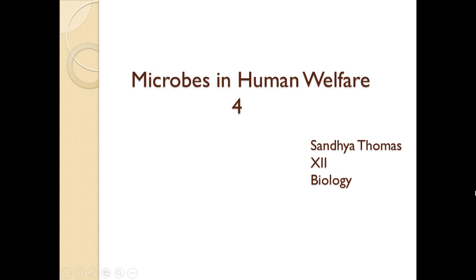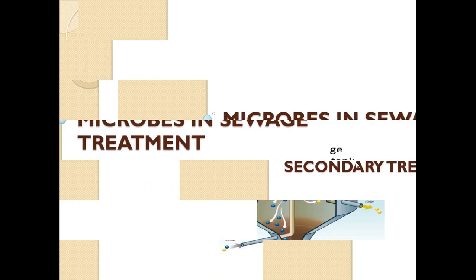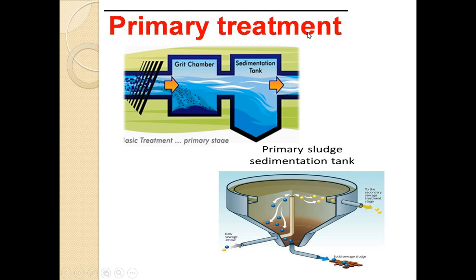Welcome to the fourth session of the chapter 'Microbes in Human Welfare.' In this module we will see the secondary treatment of sewage. In the last module we studied about primary treatment — a physical treatment — which involves two steps: filtration and sedimentation. Filtration removes the floating debris, and in sedimentation the grit, which consists of soil and small pebbles, is removed.